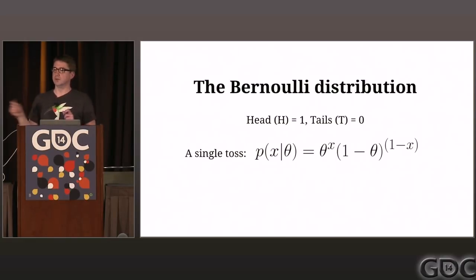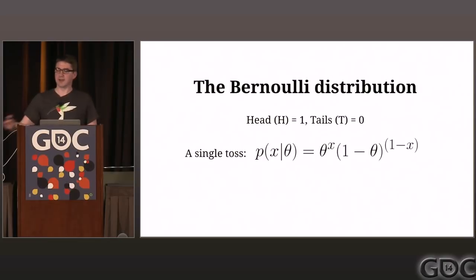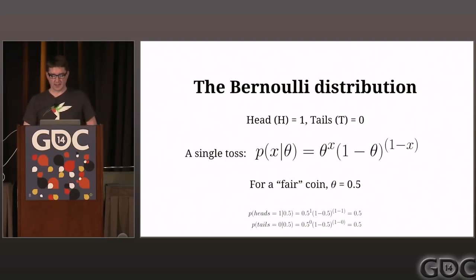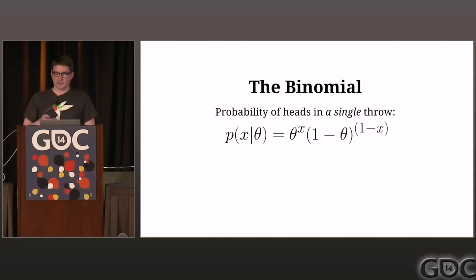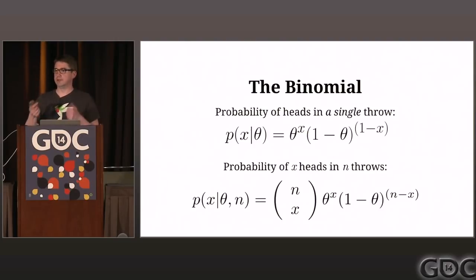Think of theta as your conversion rate — your day-one retention probability. If our day-one retention is 50%, theta is 0.5, and pushing that through the Bernoulli distribution gives probability of heads and tails each at 0.5. We're more interested in lots of users, so you build a binomial distribution by running the Bernoulli process multiple times — flipping multiple coins — and looking at the proportion of heads or tails. You account for the combinatorial with N-choose-X.